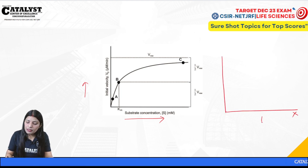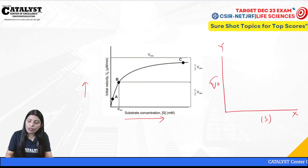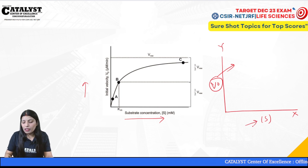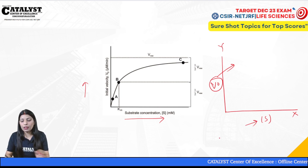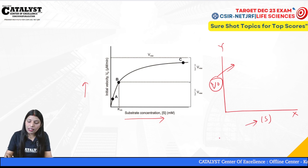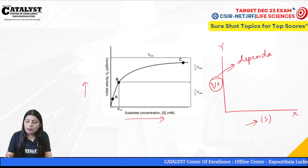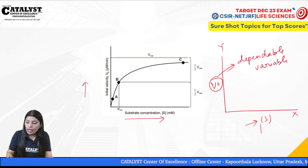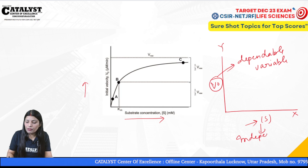On the Michaelis-Menten graph, the x-axis is substrate concentration and the y-axis is V0, the velocity. The velocity is the dependent variable, and the substrate concentration is the independent variable. This is important for four-mark questions.